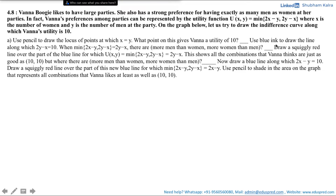Use blue ink to draw the line along which 2y minus x is equal to 10. When the minimum of (2x - y, 2y - x) is equal to 2y - x, are there more men than women or more women than men?